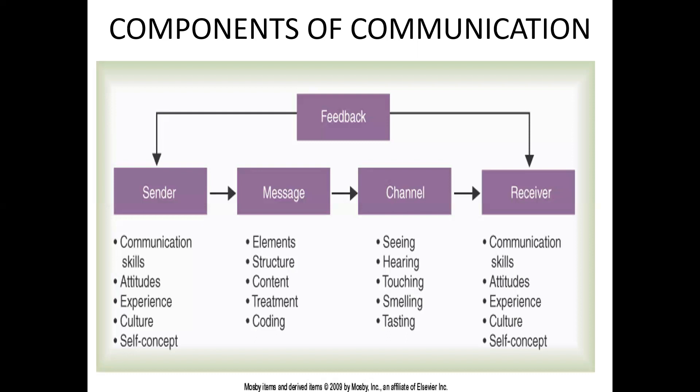The second step is message. The encoded idea that is transferred by the sender is called a message. It is something that a sender wants to communicate or transfer to the specific receivers. Messages can be in two forms: verbal or nonverbal. Verbal includes written or spoken. Nonverbal includes appearance, body language, silence, sound and actions. The third step is encoding — it is a method by which the idea or thought of a message is converted into symbols that can be transmitted. In the process of encoding, one should consider the contents included in the message and how the receiver will interpret it.